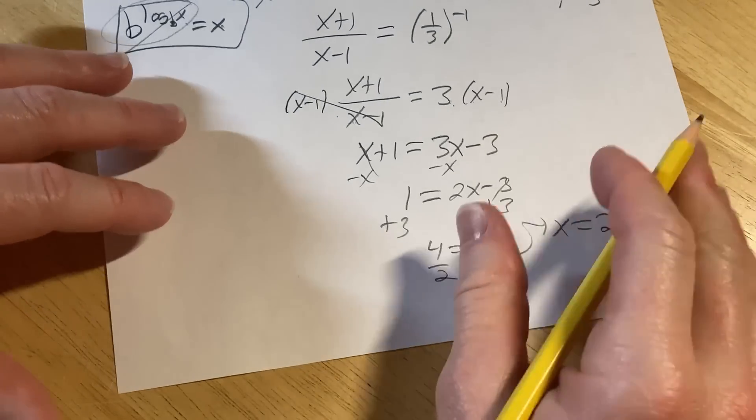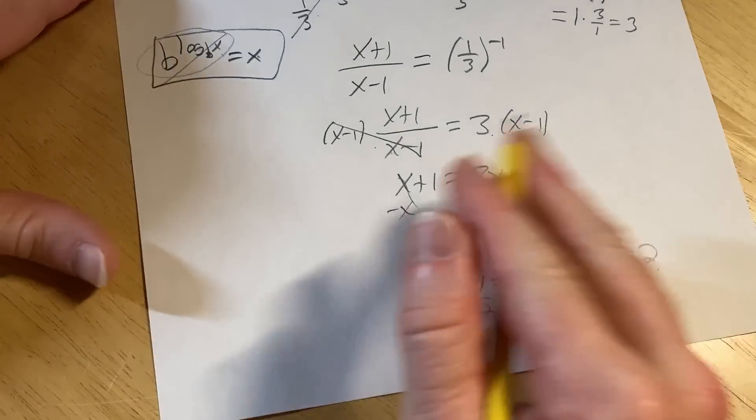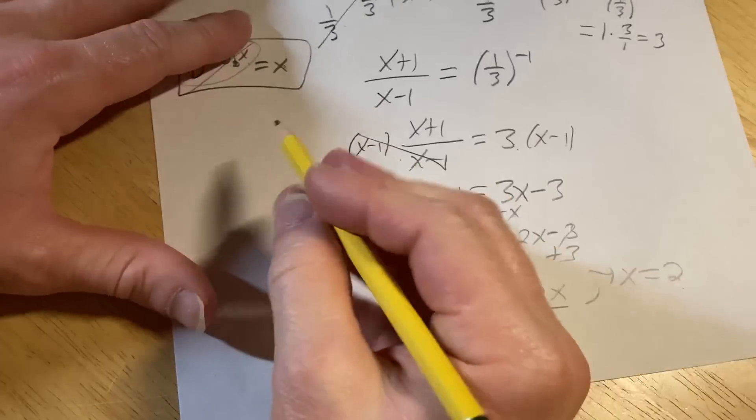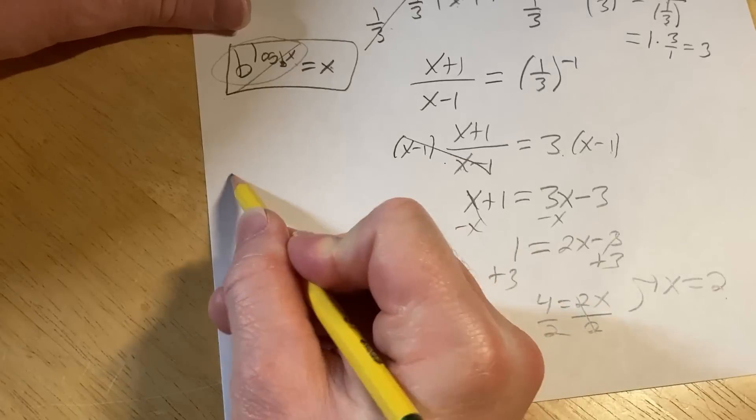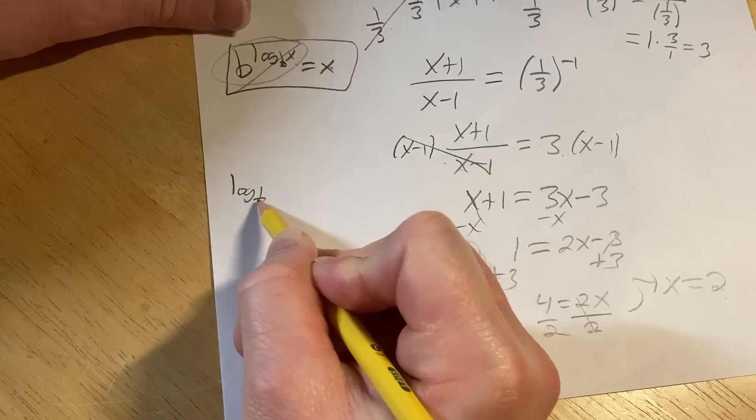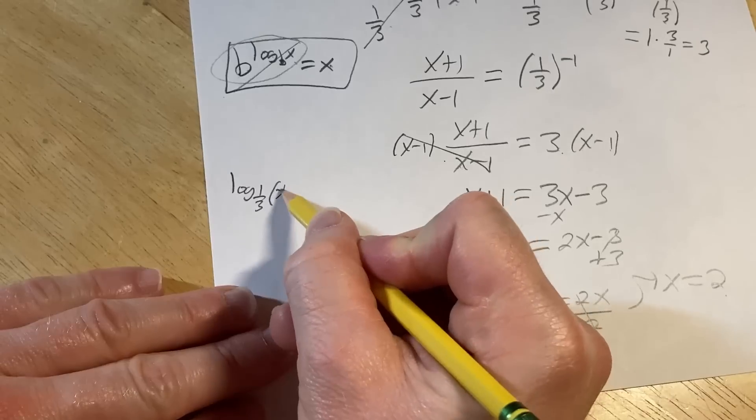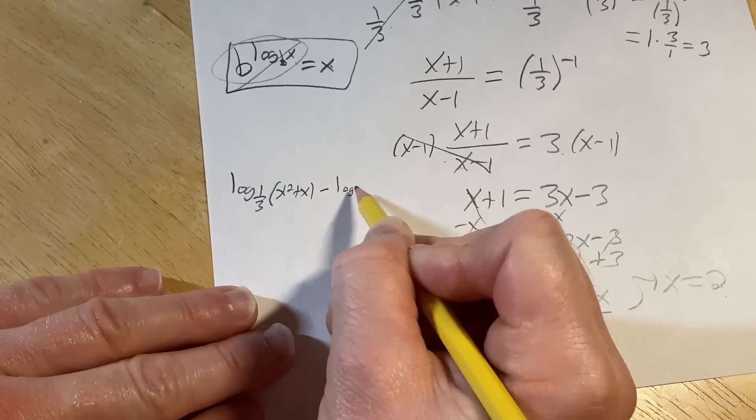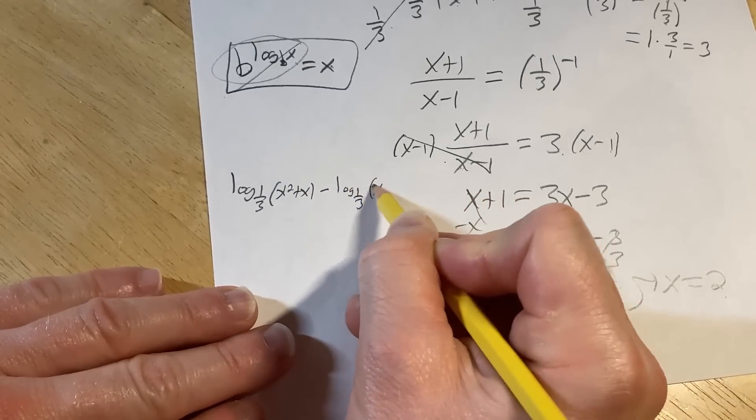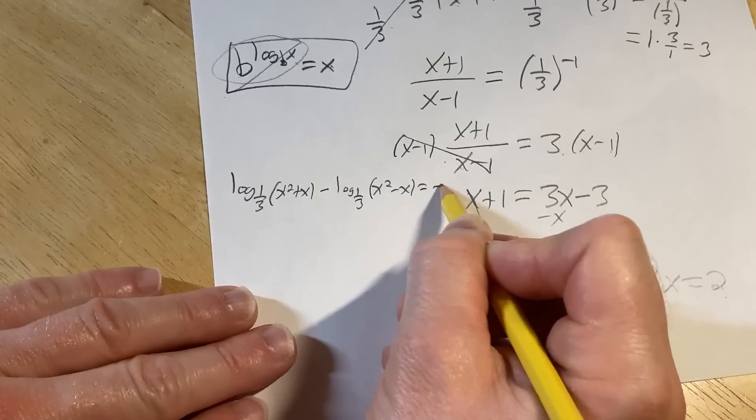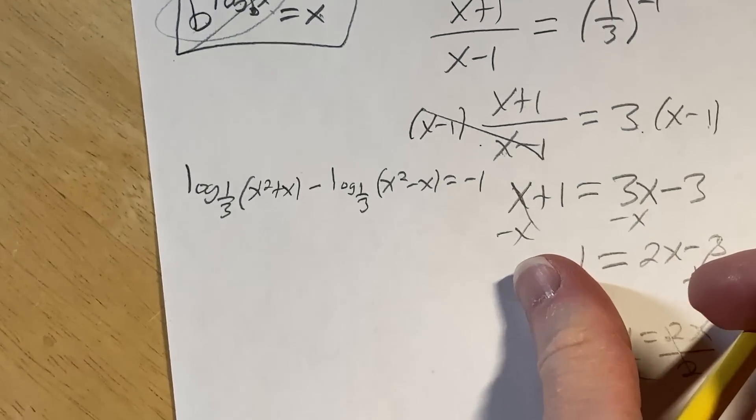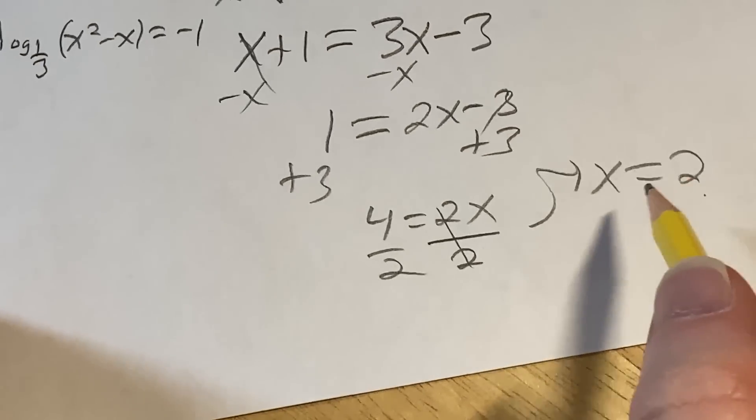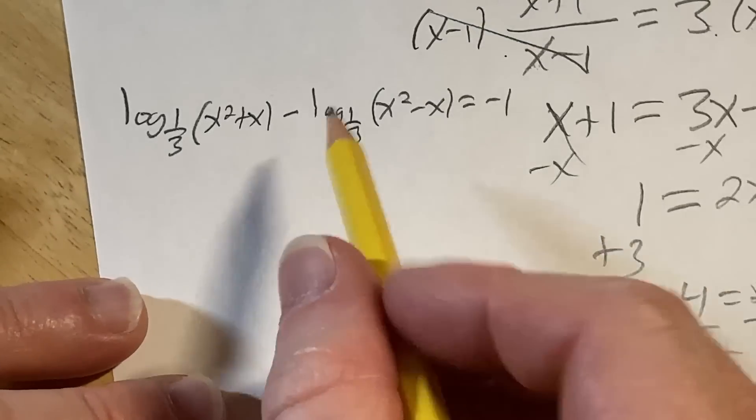But we're not done. Whenever you have one of these problems, it's really important to check your answer. So let's go ahead and check our answer here. So the original equation was, I have a little bit of room here, I'll make it work. Log base one-third of x squared plus x minus log base one-third of x squared minus x, and that's equal to negative one. Let me zoom in here so you can see it. And what we're going to do now is we're going to plug in two, because two is our possible answer, into the original equation.